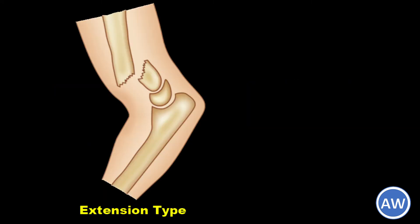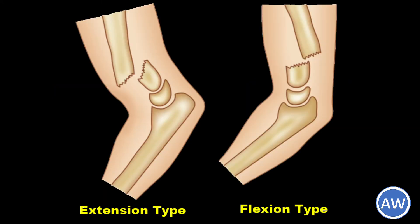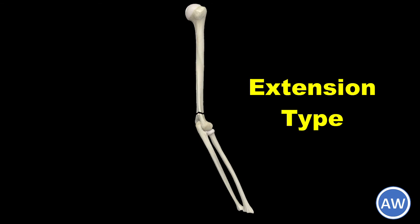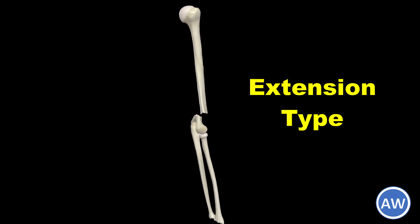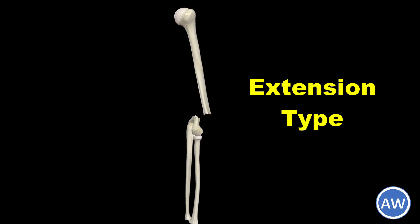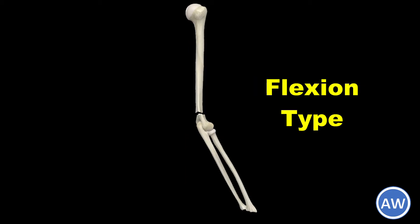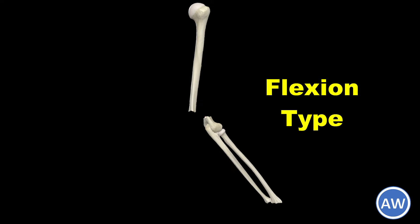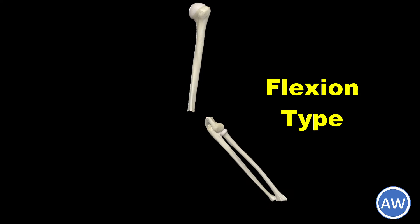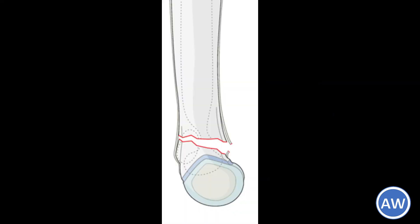A supracondylar fracture may be of extension or flexion type depending upon the displacement of the distal fragment. The extension type is the commoner of the two. In this, the distal fragment is extended, that is tilted backwards in relation to the proximal fragment. In the flexion type, the distal fragment is flexed, that is tilted forwards in relation to the proximal fragment.